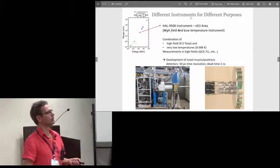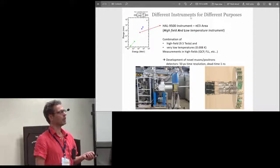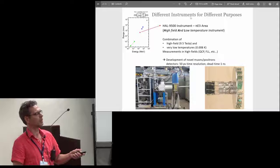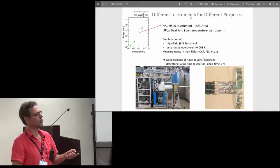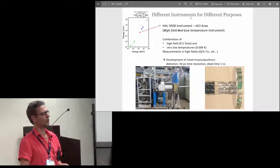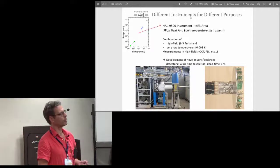For very low temperatures and very high fields, this is again interesting for quantum critical phenomena and flux line lattice in superconductors. There you need a very good time resolution to be able to measure the muon spin precession at these high fields. There is a very special detection system with 50 picosecond time resolution which allows you to measure very high precession frequencies.